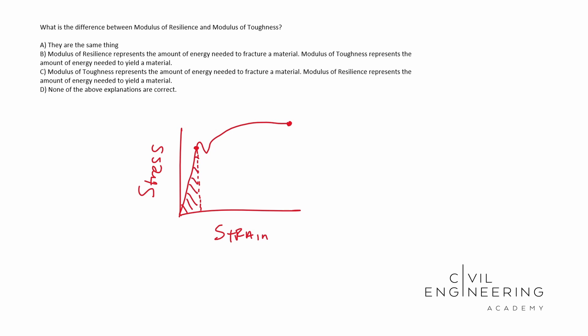Whereas with toughness, if you took the area under the curve for just about this entire thing, it looks like you did something like this, right? You found the area underneath the curve, that would be your modulus of toughness.